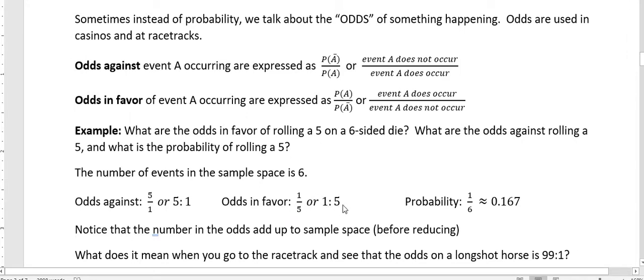Notice when we talk about odds in favor, we're talking about favorable outcome, which if five is what we want, that's our favorable outcome, compared to our unfavorable. But if we have odds against, we're talking about unfavorable compared to favorable. Remember, favorable is what we want to happen. That's our favorable event.